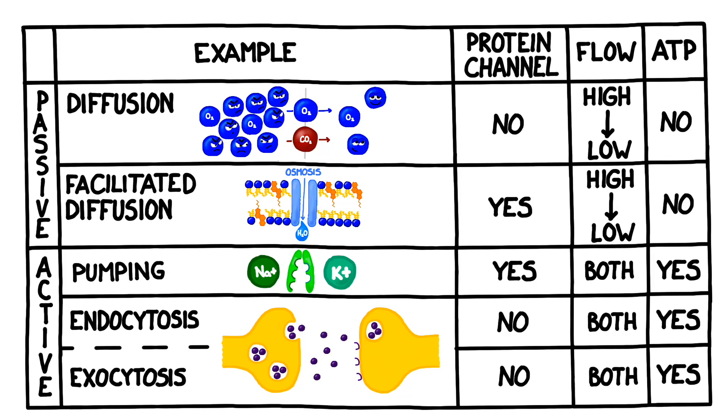So there we have it, our grid that compares and contrasts passive and active transport. If you'd like to learn more about homeostasis, click here. And if you'd like to learn more about the cell membrane, click here. YouTube thinks that you'll like this video, and I hope you'll also consider subscribing to my channel. Thanks again for watching!